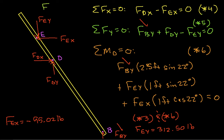Let's do this in yellow. FDX is equal to FEX, which is minus 95.02 pounds. And FDY is going to be FEY minus FBY. We know FEY and we've known FBY for a little while. So we can find that FDY is 291.92 pounds.